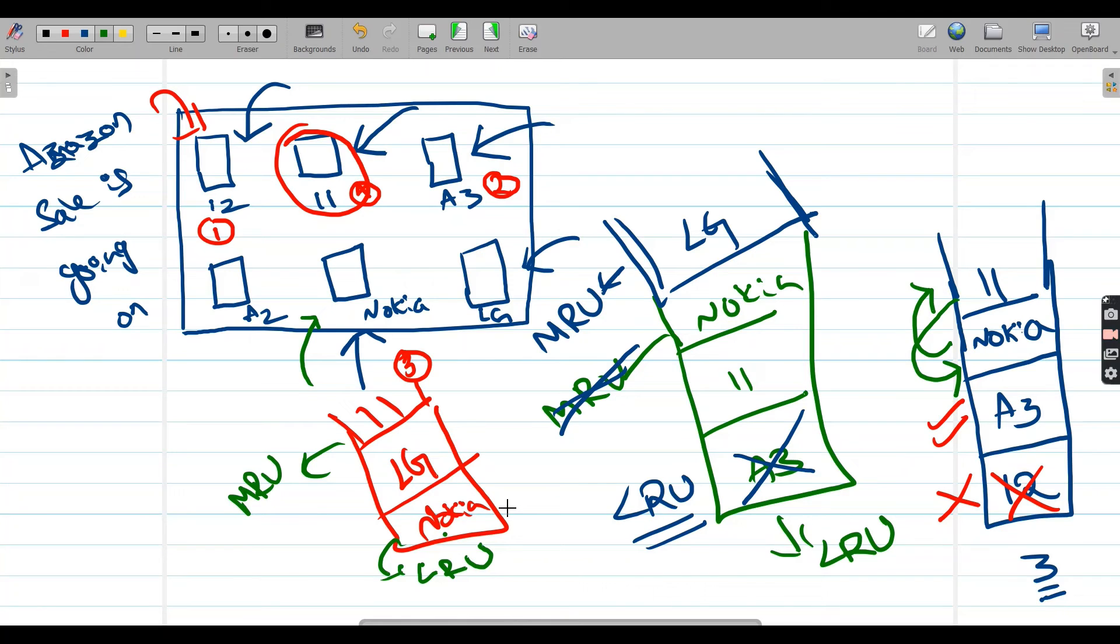So the only thing you have to keep in mind is which one is getting used least recently and which one is getting used most recently. Based on these two, you can identify which page is eligible for getting deleted. So this is one practical example on LRU, and I hope you understood the algorithm's purpose.